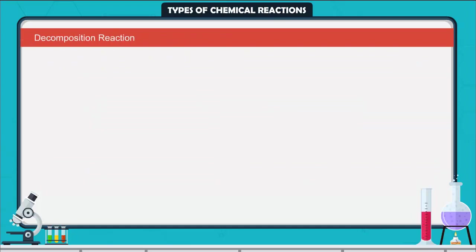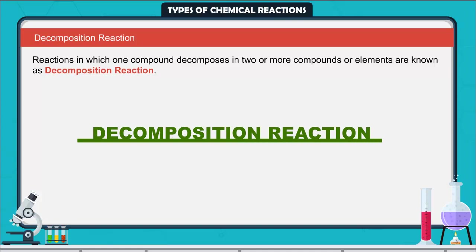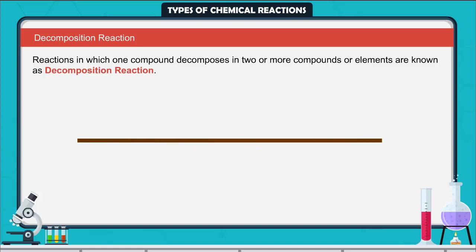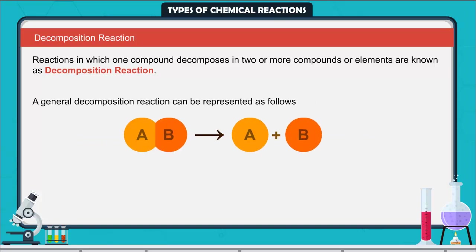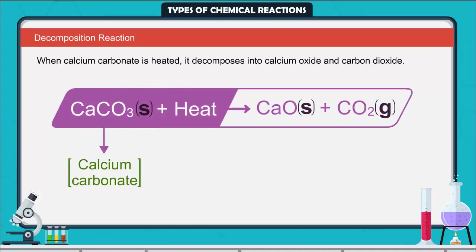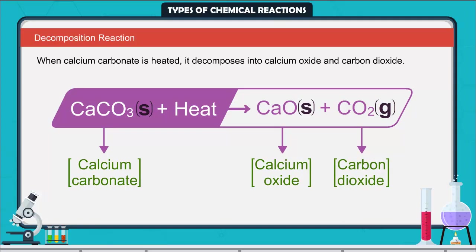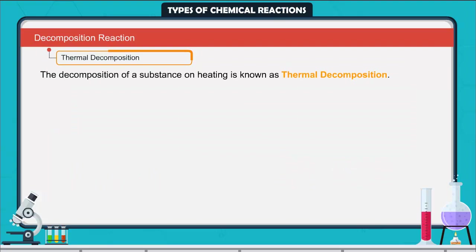Decomposition reaction. Reactions in which one compound decomposes into two or more compounds or elements are known as decomposition reactions. A decomposition reaction is just the opposite of a combination reaction and is represented as: AB → A + B. When calcium carbonate is heated, it decomposes into calcium oxide and carbon dioxide. The decomposition of a substance on heating is known as thermal decomposition.